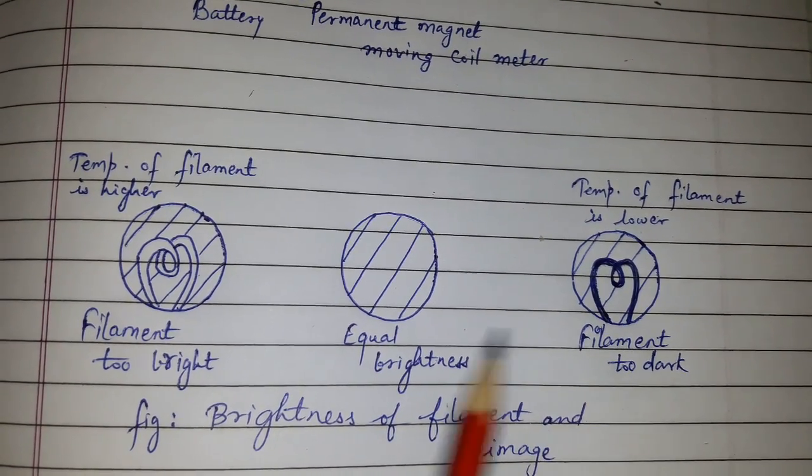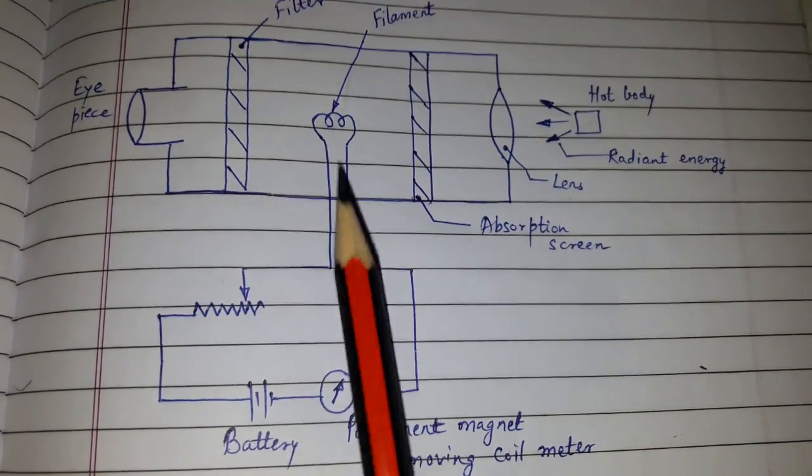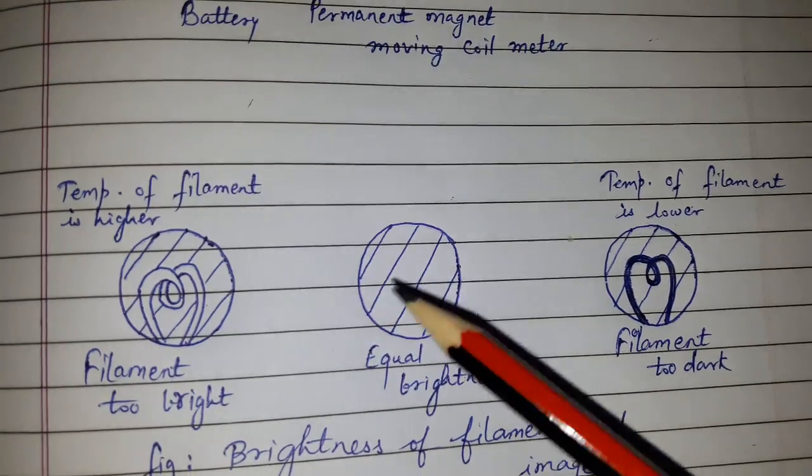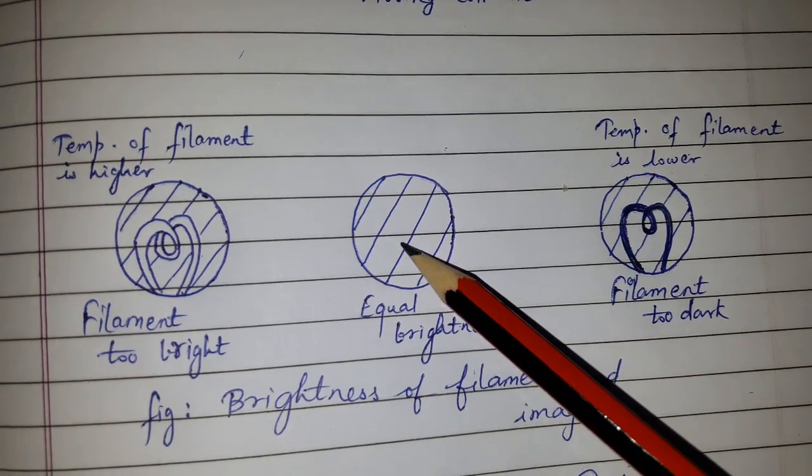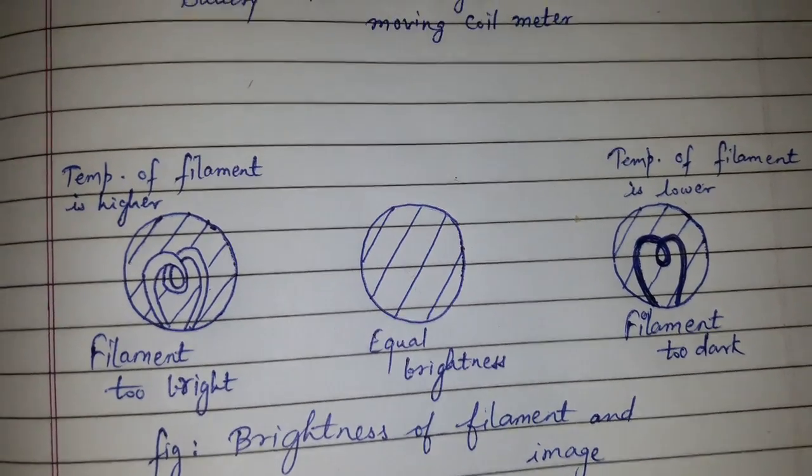So we should adjust the current which is flowing through the filament so that the brightness of the filament and the brightness of the image matches.